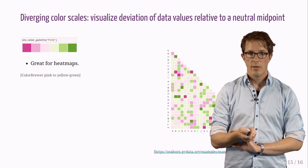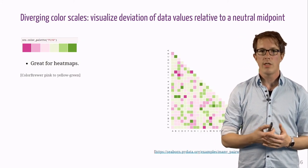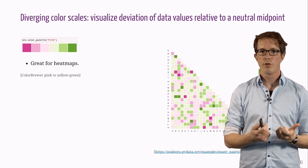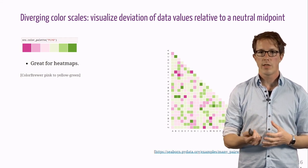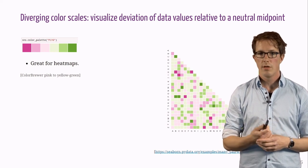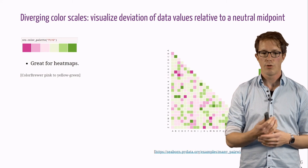Finally, here is an example for a diverging color scale used in a heat map. This is the so-called Color Brewer pink to yellow green scale, which is again suitable for color vision deficiencies. The take home message is use existing color scales designed for CVD. Don't invent your own.